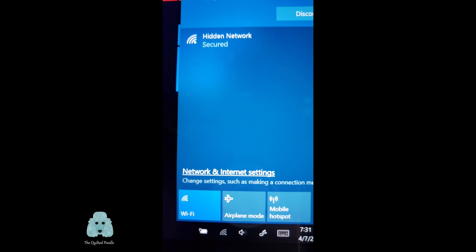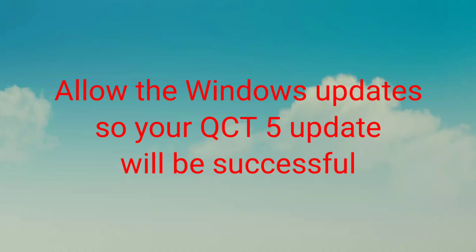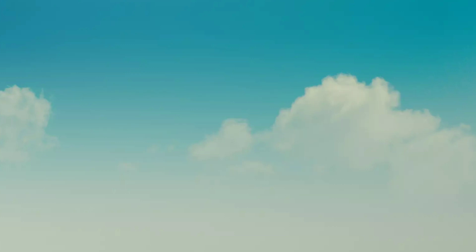To connect to the internet or Wi-Fi, just touch the Wi-Fi symbol. When you are connected by Wi-Fi to the internet, you will see the Wi-Fi symbol and you will not see the little airplane symbol. Once you connect to the internet, Microsoft will immediately tell you that you have updates waiting or pending. Allow Windows to update your machine prior to trying to install the Juki update. If you don't allow those Windows updates, you will receive errors and not be successful in downloading the new software.